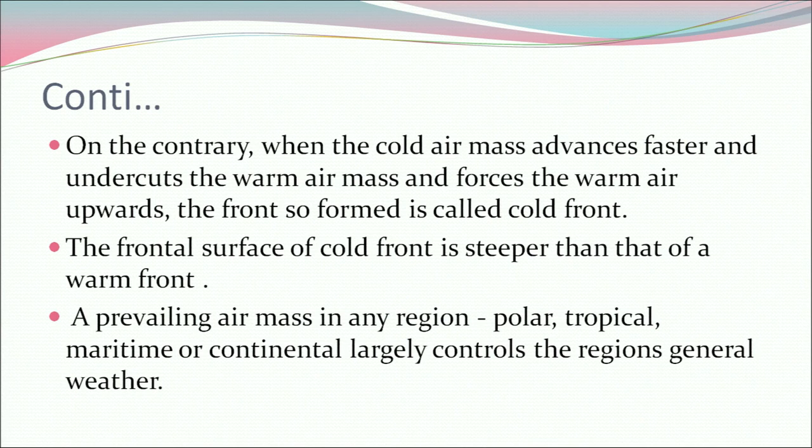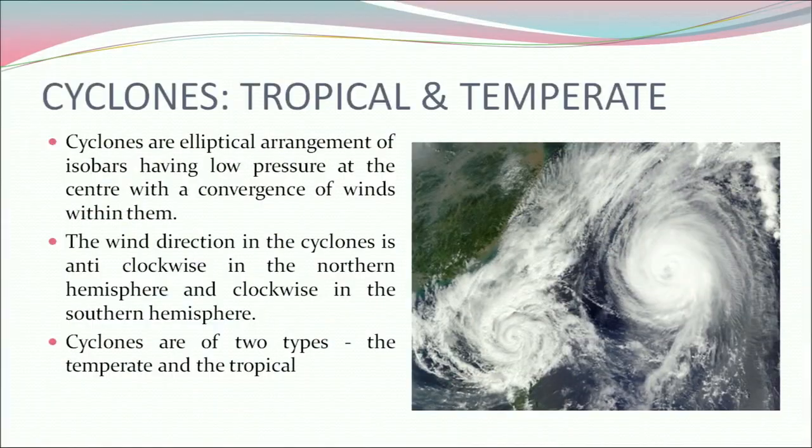A prevailing air mass in any region — polar, tropical, maritime, or continental — largely controls the region's general weather. Now let's have a look at cyclones, tropical and temperate. Cyclones are elliptical arrangements of isobars having low pressure at the center, with the convergence of winds within them. The wind direction in a cyclone is anti-clockwise in the northern hemisphere and clockwise in the southern hemisphere. Cyclones are of two types: temperate and tropical.